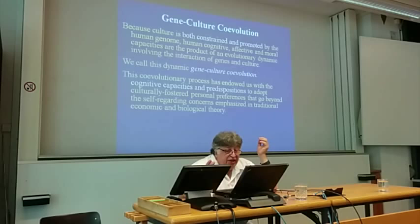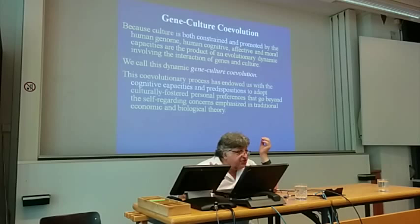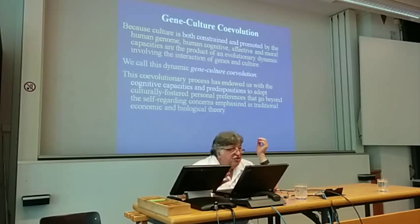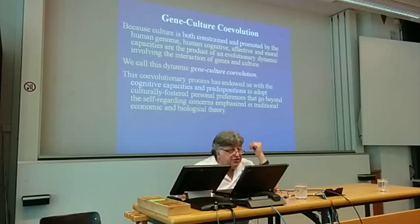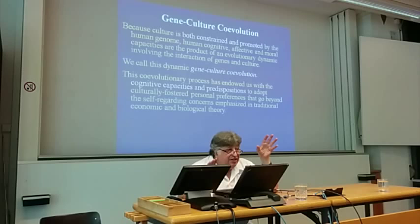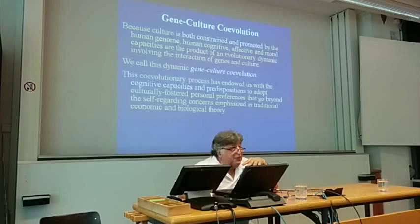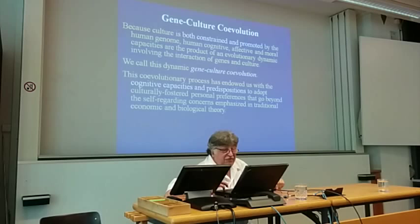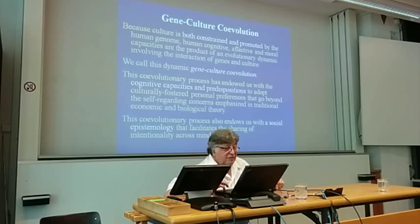Gene-culture co-evolution has endowed us with cognitive capacities and predispositions to adopt culturally-fostered personal preferences that go beyond self-regarding concerns emphasized in traditional economics and biology. We evolved in small social groups where sociality and interaction were absolutely central. Hunter-gatherer societies are genetically very diverse — not families. They're 8 to 10 unrelated families, close to zero genetic relationship. This is in contrast to every other social species, which has very high relatedness within the group.